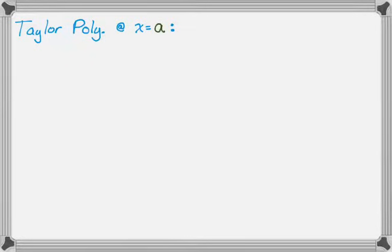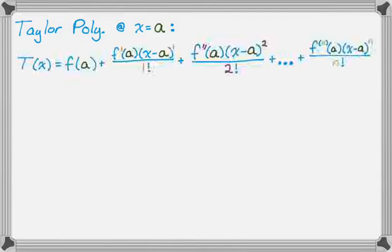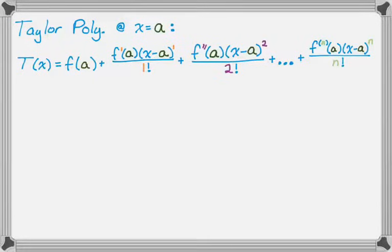First of all, you need to know how to find the Taylor polynomial centered at x equals a. The Taylor polynomial, which I'm calling t of x, is equal to f of a, plus f prime of a times (x minus a) to the first over one factorial, plus f double prime of a times (x minus a) squared over two factorial, and you keep going until you get to the nth derivative evaluated at a, times (x minus a) to the n, all over n factorial. The key thing to notice is that it always matches up — first derivative, first power, one factorial; tenth derivative, tenth power, ten factorial.